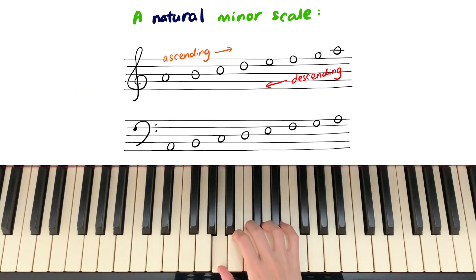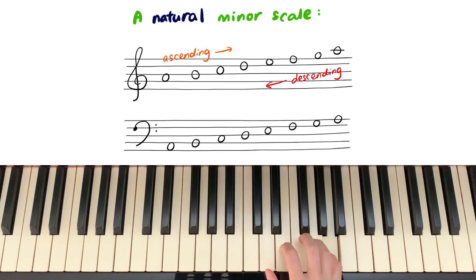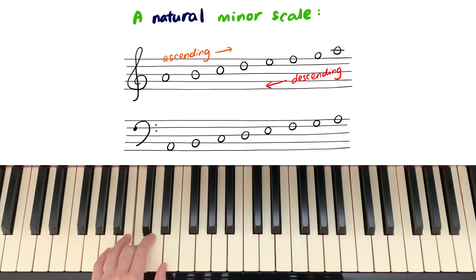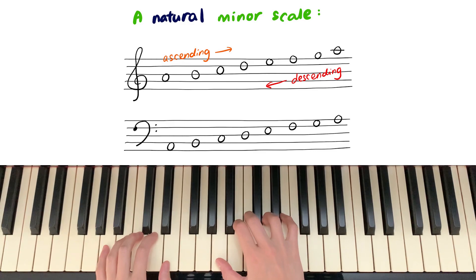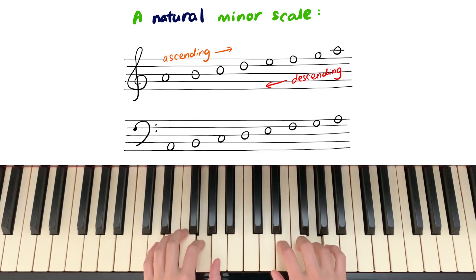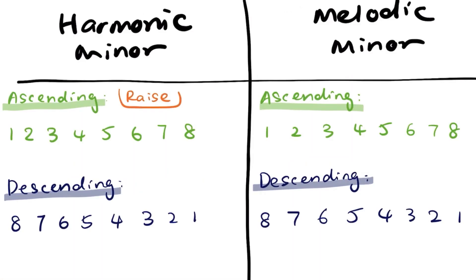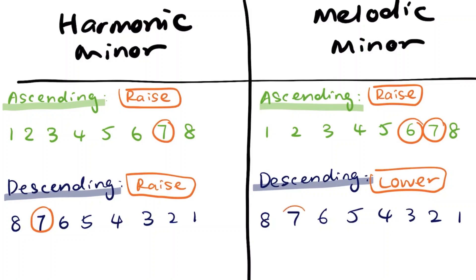For harmonic minor, we raise the 7th note a semitone higher during both ascending and descending. For melodic minor, we raise the 6th and 7th notes a semitone higher during ascending, and we lower the 6th and 7th notes a semitone during descending. Let's begin with A harmonic minor scales.